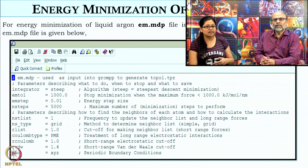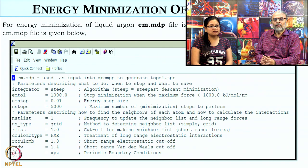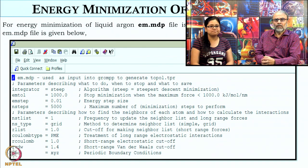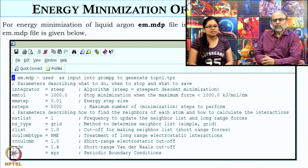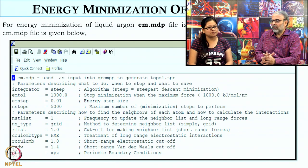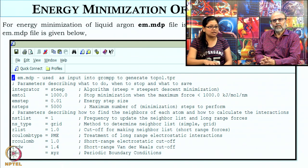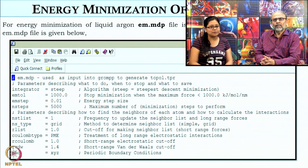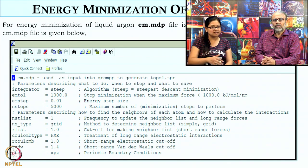NSTLIST is the neighbor list update frequency, user specified between 1 to 10. For liquid argon you could use 5, but for polyatomic molecules like water or methanol, 10 is preferred. NSTYPE is grid — the method used to calculate the neighbor list. RLIST is the cutoff for the neighbor list, which is 1 nanometer — anything beyond 1 nanometer is not considered a neighbor of a given atom.